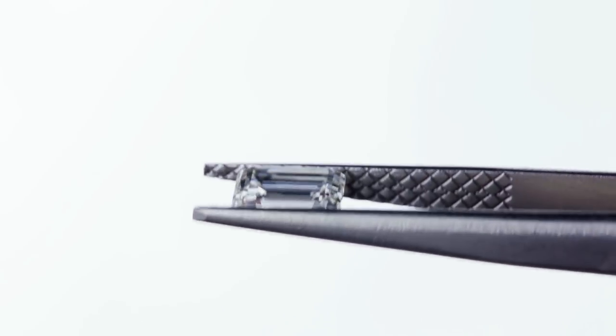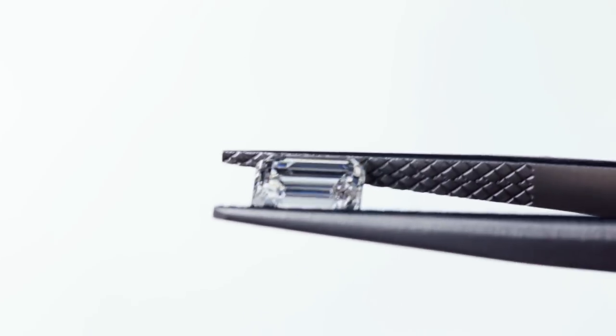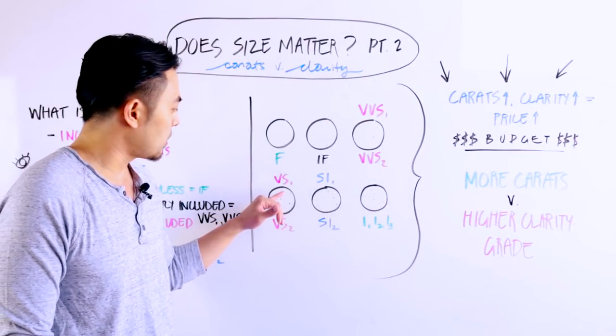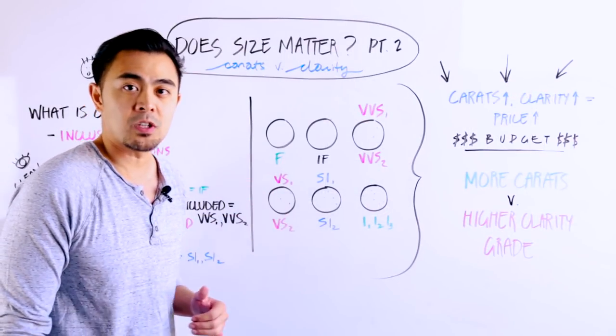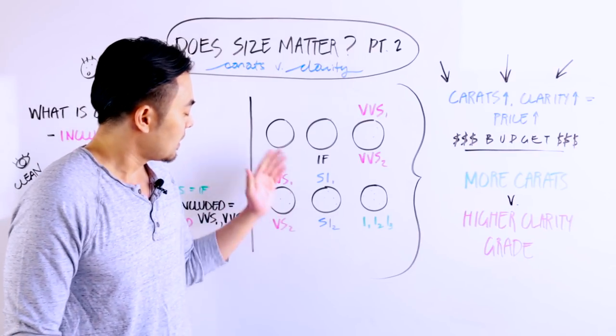So it's a VVS1 and a VVS2. Now, if it's a VS1 and a VS2, then it's similar to a VVS1 and a VVS2, but there are a few more inclusions maybe in more noticeable areas such as the center of the stone. So that would be considered a VS1 or a VS2.